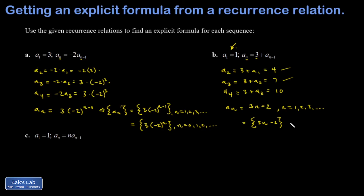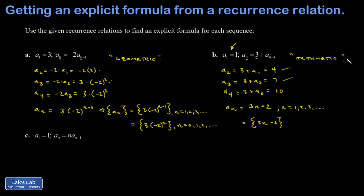Example a was a geometric sequence — you multiply by the same amount every time, and that amount was -2. Example b was an arithmetic sequence — you add the same amount every time, and that amount was 3.